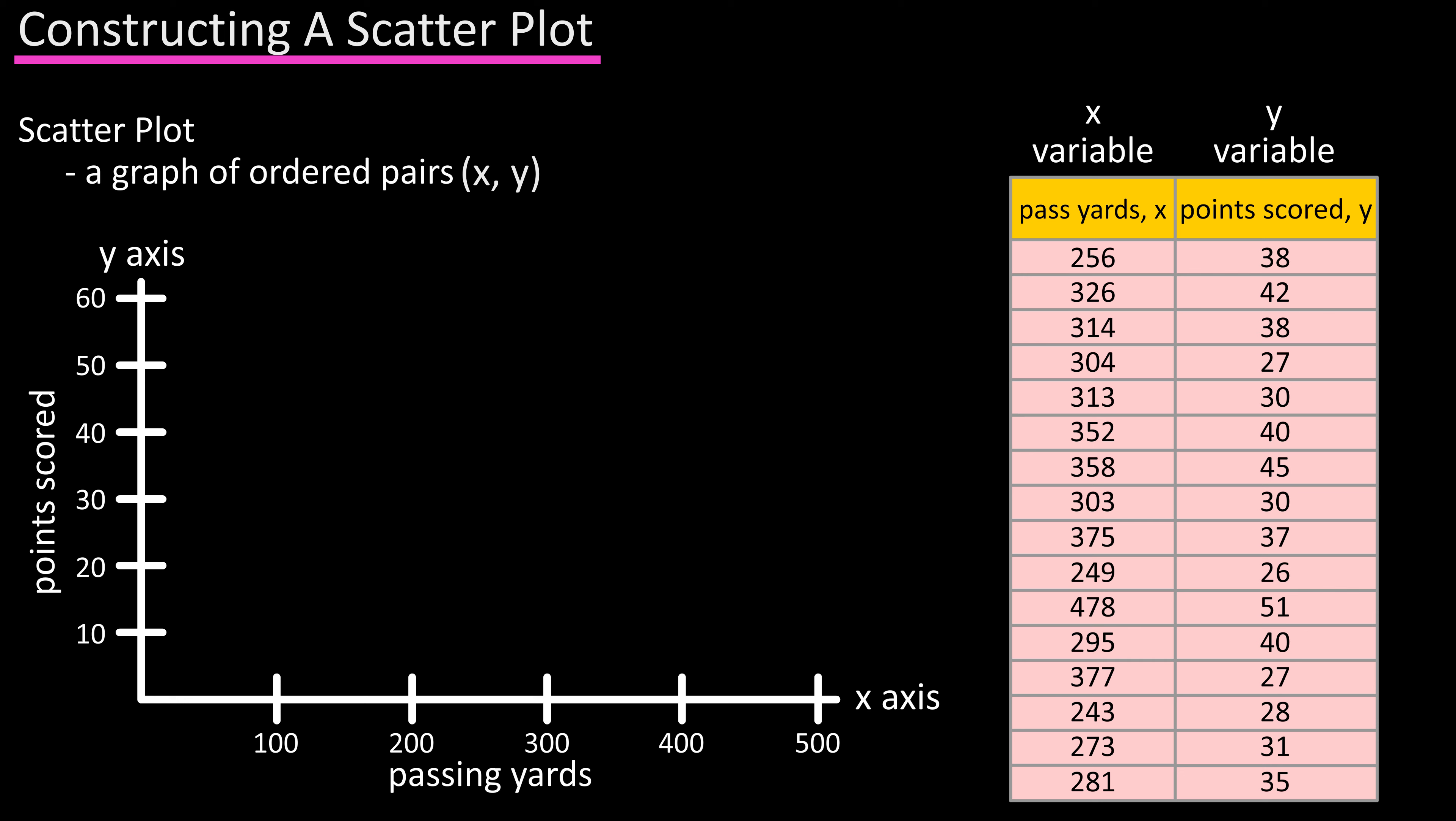Next we're going to plot the points on the graph. So from the first row in the table we have 256 as our x-axis value and 38 as the y-axis value. Find that point of intersection on the graph and put a dot there.